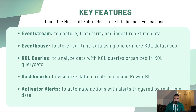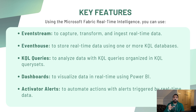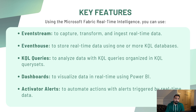There are key features in Microsoft Fabric for real-time intelligence. First, Event Streams — these capture, transform, and ingest your real-time data. Next is Event House — when real-time data comes through the event stream pipeline, you store the data in the Event House. Later you can run KQL queries on top of that. KQL is similar to SQL but used in specific places like Event House.